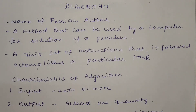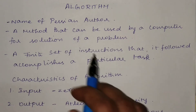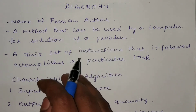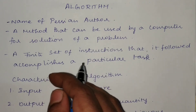In this video we're going to discuss an introduction to algorithm. The word 'algorithm' comes from the name of a Persian author who wrote a textbook in the field of mathematics. Later, this word became more familiar in the field of computer science. An algorithm is a method that can be used by the computer for the solution of any given problem.